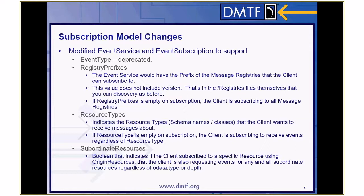We added a boolean for subordinate resources. We had origin resources in the original model where you could subscribe to resources by putting in the URI, but it meant you had to fill out any current and future URI. For example, with a disk subsystem, you'd have to list the storage URI and all disk URIs and volume URIs — and if you created another volume, you'd have to resubscribe. It's much easier to just set a boolean saying you care about this storage resource and everything under it, subscribing to all subordinate resources with a single flag.